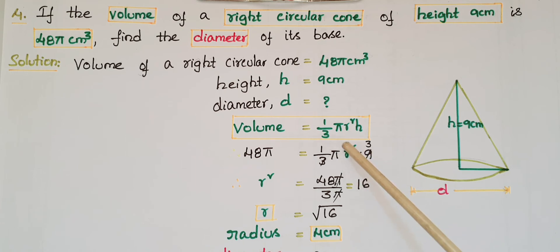Now we find r. r² equals 48π divided by 3π. Cancel π with π, then 48 divided by 3 equals 16. So r equals square root of 16, which is 4 centimeters.